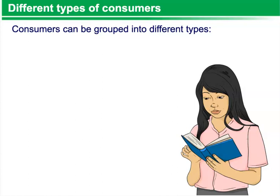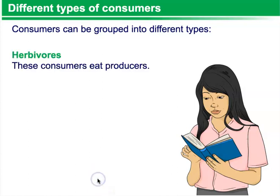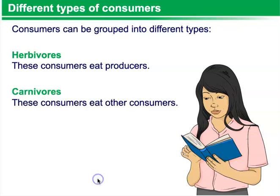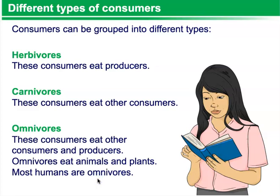Different types of consumers. Consumers can be grouped into different types. Herbivores are consumers that eat producers. Carnivores are consumers that eat other consumers. And omnivores are consumers that eat other consumers and also producers. Humans would be an example of omnivores.